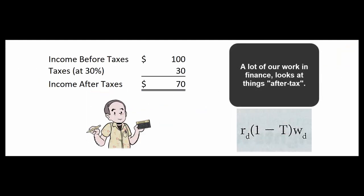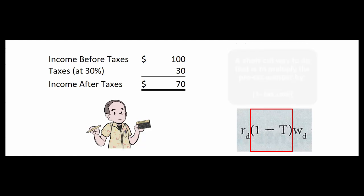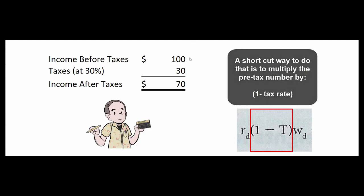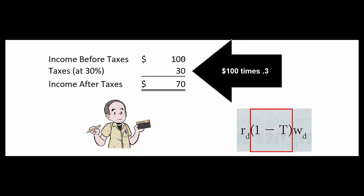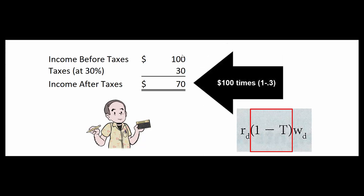Speaking of our debt costing us less because interest is tax deductible, in finance, to get an after-tax number, we'll often use the shortcut of multiplying the pre-tax number times one minus the tax rate. We're doing in one step what you might do in two steps. For example, if a company had income before taxes of $100, we can multiply $100 times the tax rate of 30%. That would give us income taxes of 30, and then we would subtract 30 from 100 to get 70. Or we could simply take the shortcut of taking 100 times one minus 0.3, and that gives us the $70.